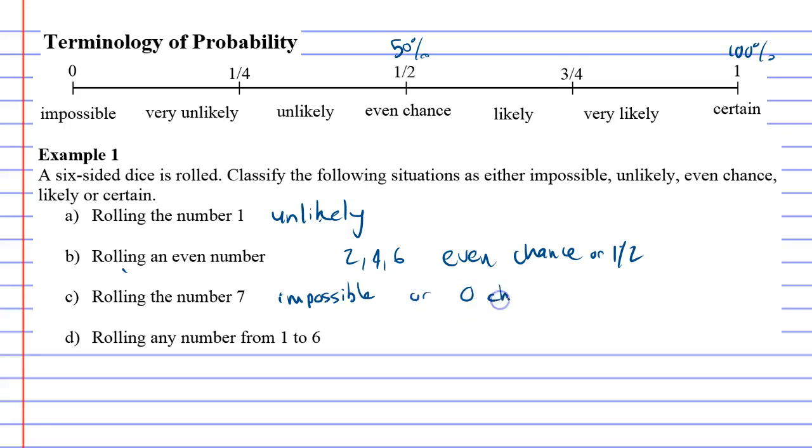Rolling any number from 1 to 6. When you roll a dice, you're always going to get any one number from 1 to 6, so this one's certain.